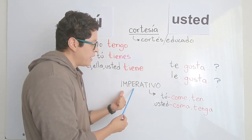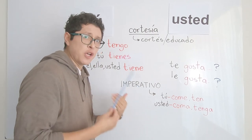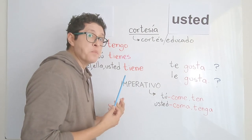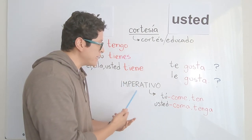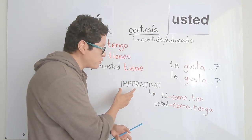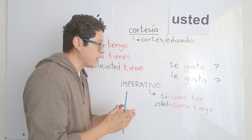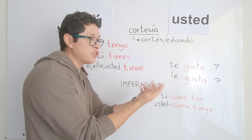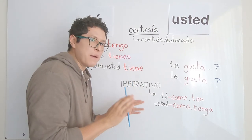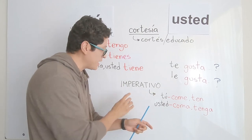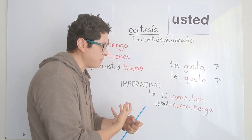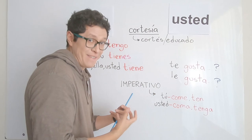The third grammar implication is the imperativo — the imperative mood. This is a grammar mood in Spanish used when you want somebody to do something. Spanish requires a specific conjugation when giving orders or requests. While books often describe it as related to commands, I define it as: when you want somebody to do something. You also need a specific conjugation here depending on whether you use tú or usted.